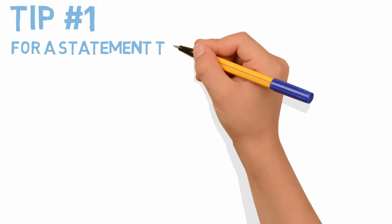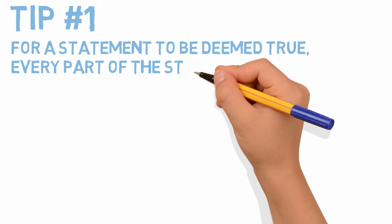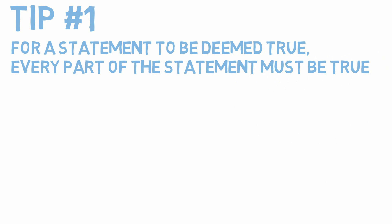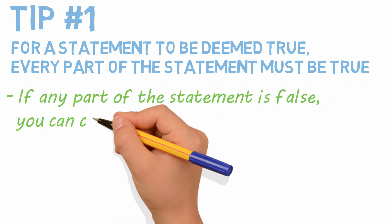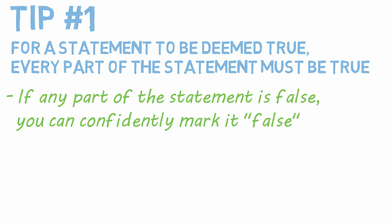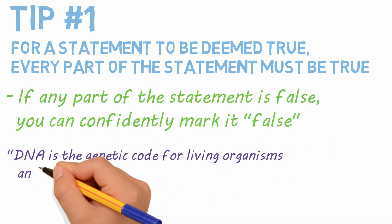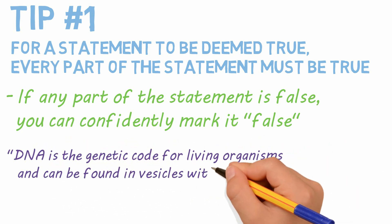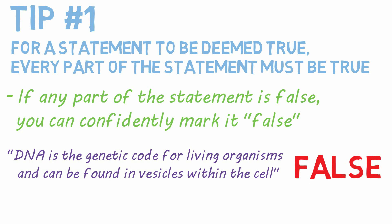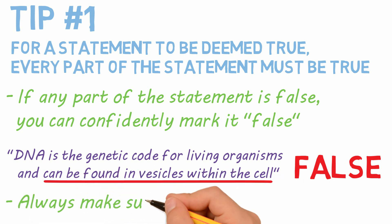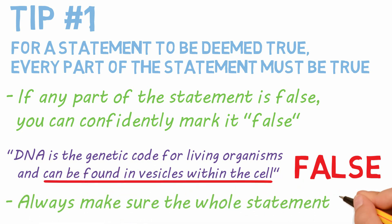Tip number one is that for a statement to be deemed true, every part of the statement must be true. If any part of the statement is false, you can confidently mark the whole statement as false. For example, the statement 'DNA is a genetic code for living organisms and can be found in vesicles within the cell' is false because the second part of the statement is false. So always make sure the whole statement is true.